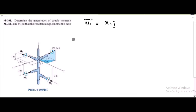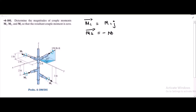For the couple moment M2, M2 is also parallel to the x-axis but in the negative direction. So we have M2 equal to negative M2i.